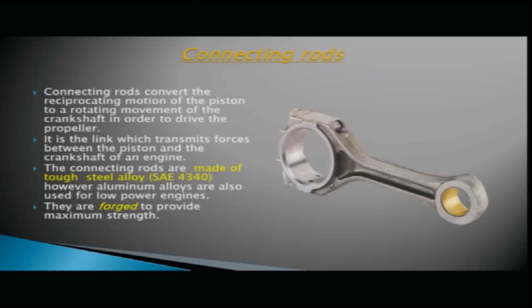The connecting rod has two ends: the smaller end is connected to the piston and the larger end is connected to the crankshaft. The reciprocating motion of the piston is converted to the rotary motion of the crankshaft. The connecting rods are also made of tough steel alloy, mainly SAE 4340, though in some low-powered engines aluminium alloys may also be used.